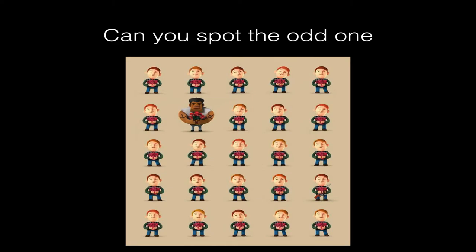Our brains are wired to pick up that. Check this image out here. Can you spot the odd one? Even before I asked that question, your eyes were probably drawn to that huge guy with the tattoos and the flowers. He looks very different from all of the other guys in the image. We are wired to find things which are out of place.